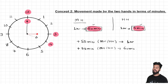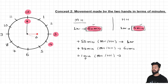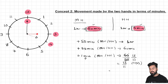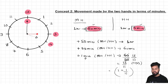Now let us find out how much time would be taken by the minute hand to gain just 1 minute over the hour hand. Using the unitary method: to gain 1 minute, time = 60/55, which simplifies to 12/11. This is an improper fraction, and when converted to mixed fraction form it becomes 1 + 1/11 minutes. This is Concept 2: if the minute hand wants to gain 1 minute over the hour hand, it will take 1 + 1/11 minutes.